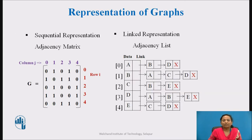Representation of Graphs: There are two common ways of storing graphs in computer memory. The first way is sequential representation using adjacency matrix, and the second way is linked representation by using an adjacency list. Let us see in detail these representations of graph data structure.